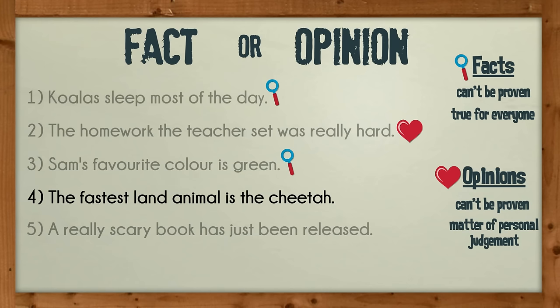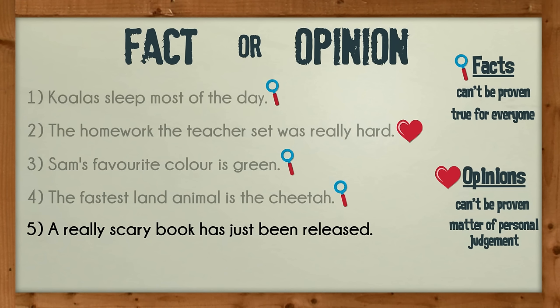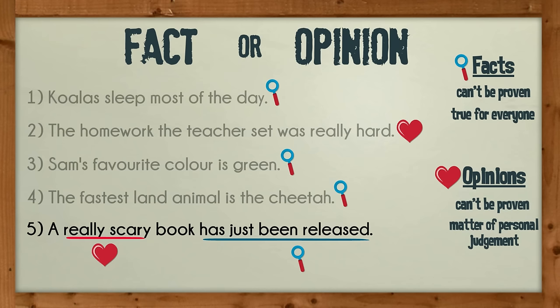The fourth is a fact — it can be measured. Did you notice that this last one has fact and opinion? It is a fact that the book has just been released — this can be proven — but it's an opinion that it's really scary. That won't be true for everyone.